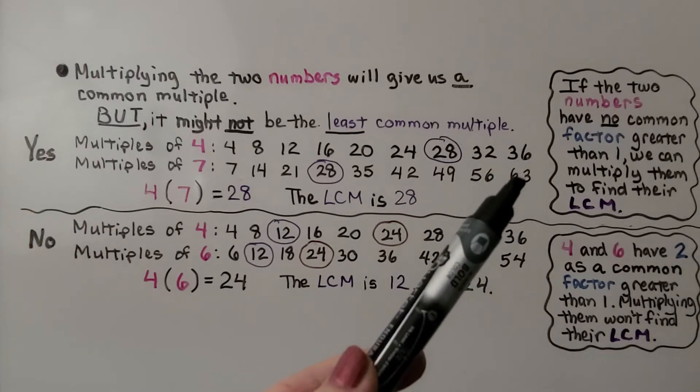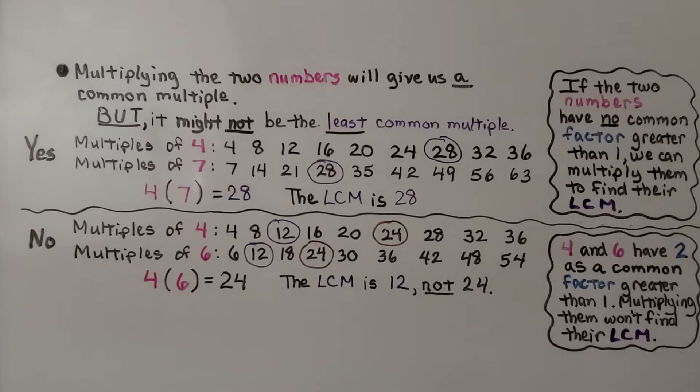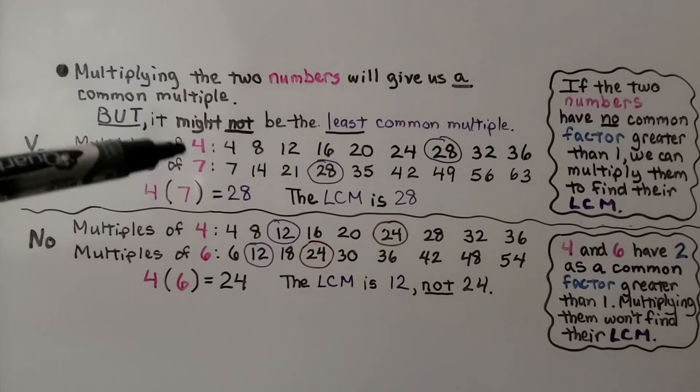If the two numbers have no common factor greater than 1, we can multiply them to find their LCM. 4 and 7 don't have a common factor.